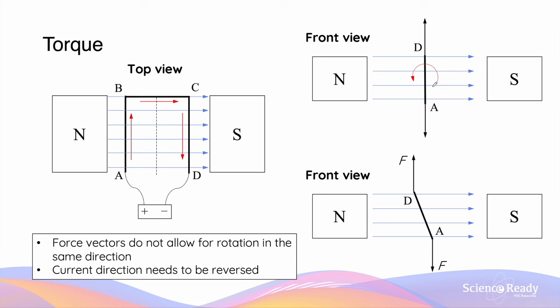The armature will continue to rotate due to its previous rotation and resulting momentum. However, once the armature goes past this vertical orientation, we will have a problem.